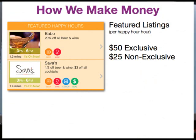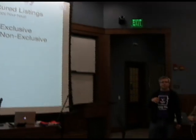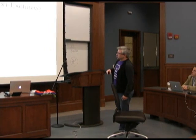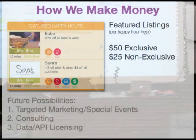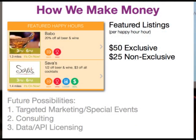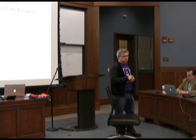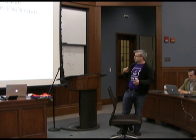You may wonder how we make money. The first way is off featured listings. In Ann Arbor at 4 o'clock on a Tuesday, there are 41 happy hours within a mile. So you are buried in the middle of the list if you're a bar or restaurant owner. Wouldn't it be great if you could pop to the top? So we do that for them. Future possibilities include highly targeted marketing, special events, one-day or one-hour promotions, proximity-based offers, additional consulting, and licensing the data or API. But right now our primary method is featured listings.